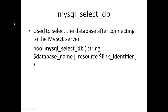Next we have mysql_select_db. That function is used to select the database after connecting to the MySQL server. Basically, you'll connect to the MySQL server, select the database, and then issue queries against it. This function returns a boolean. You pass it the database name as well as the link identifier — the resource returned from mysql_connect. The database name is required; the resource is not. If you don't pass a resource, it'll use the last MySQL resource that was opened.